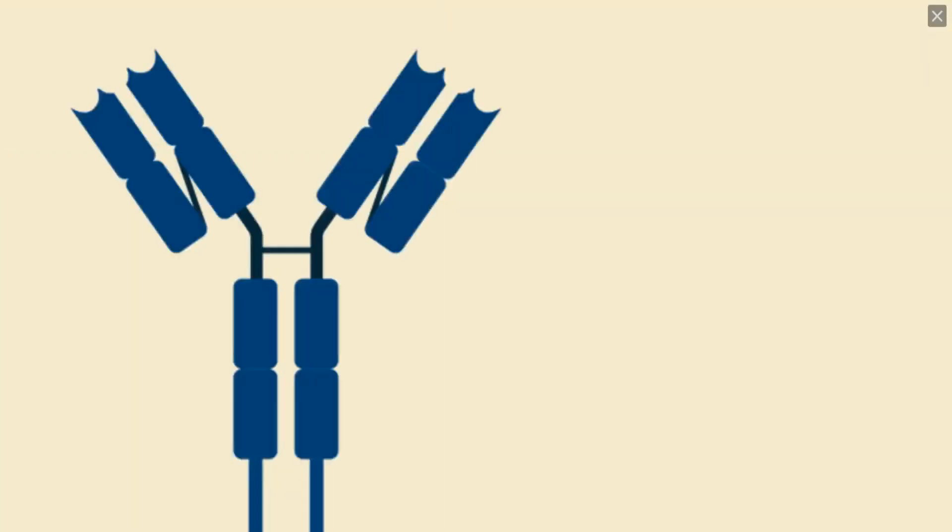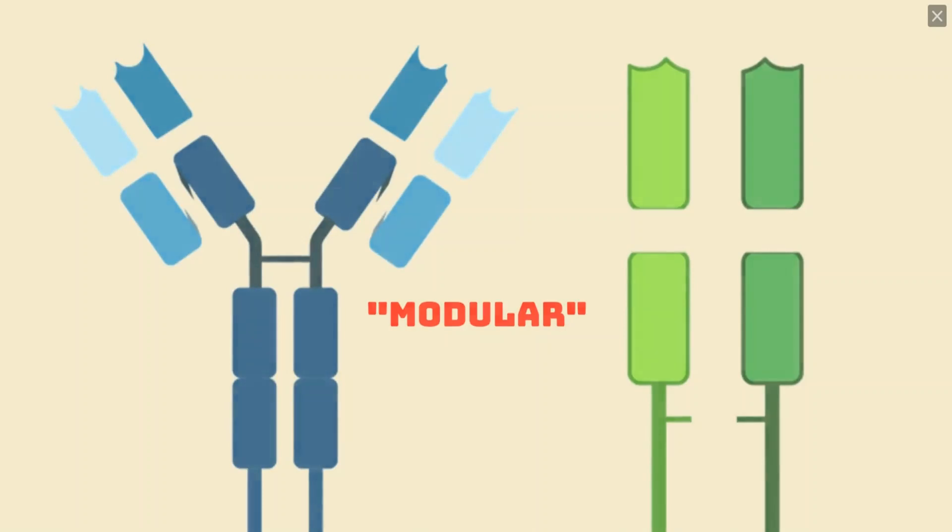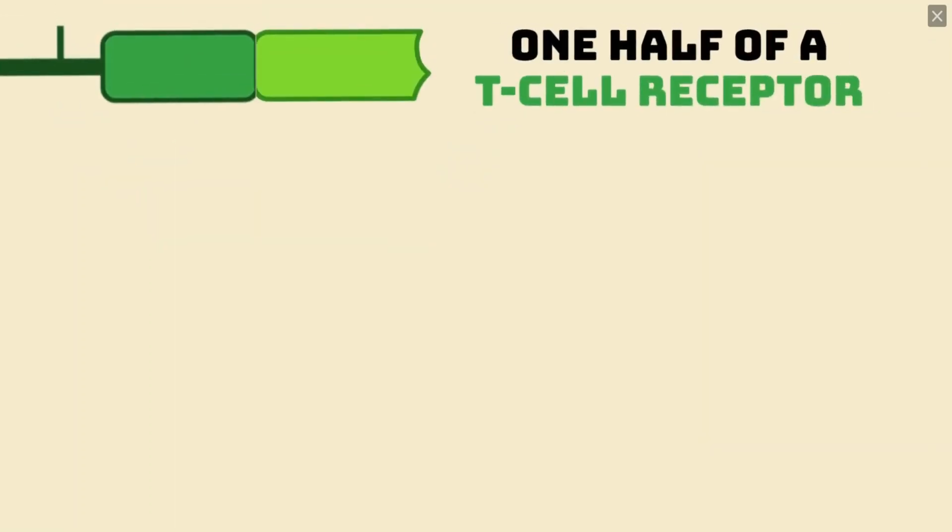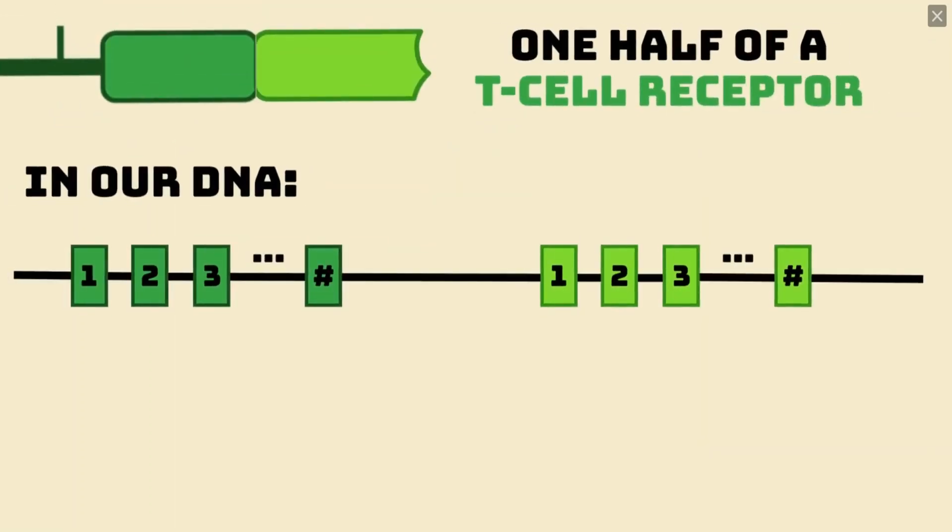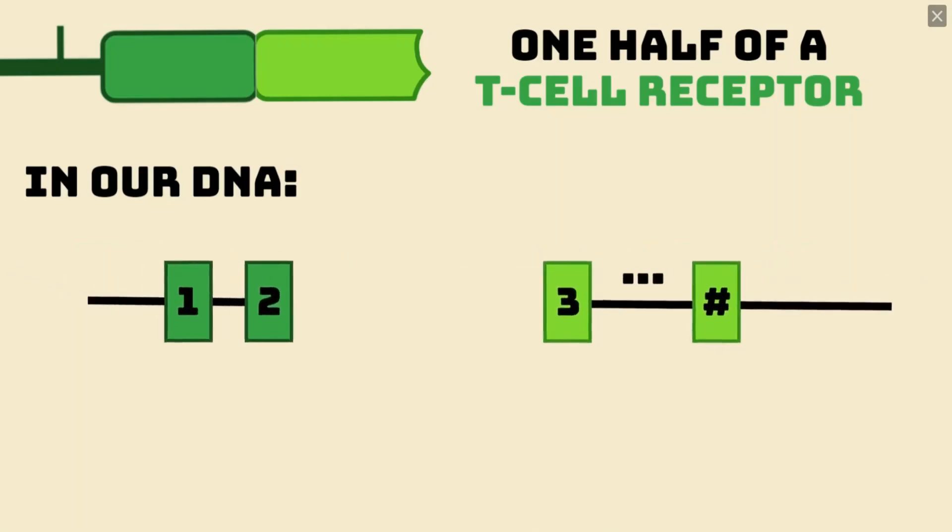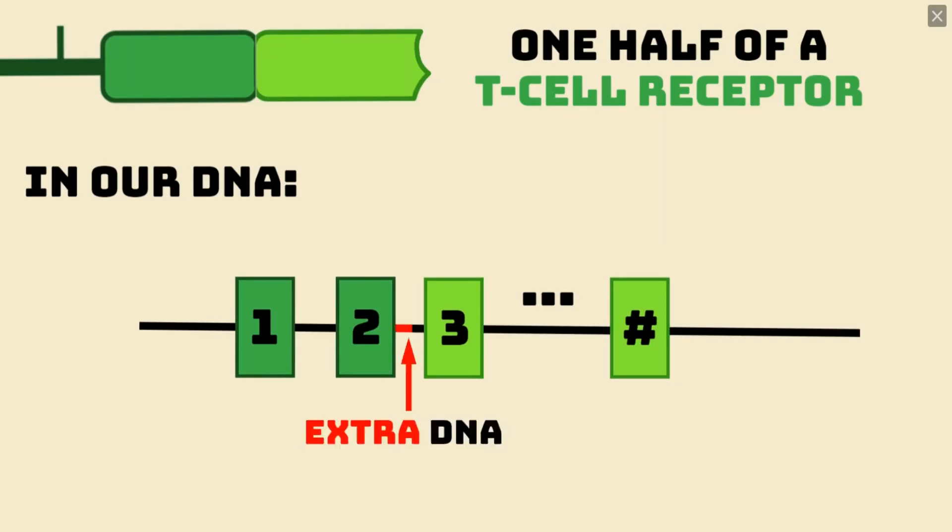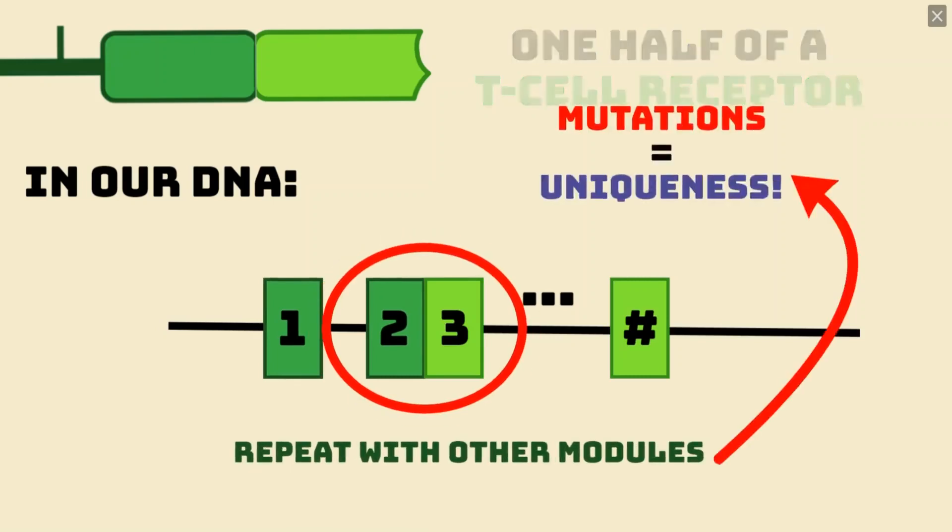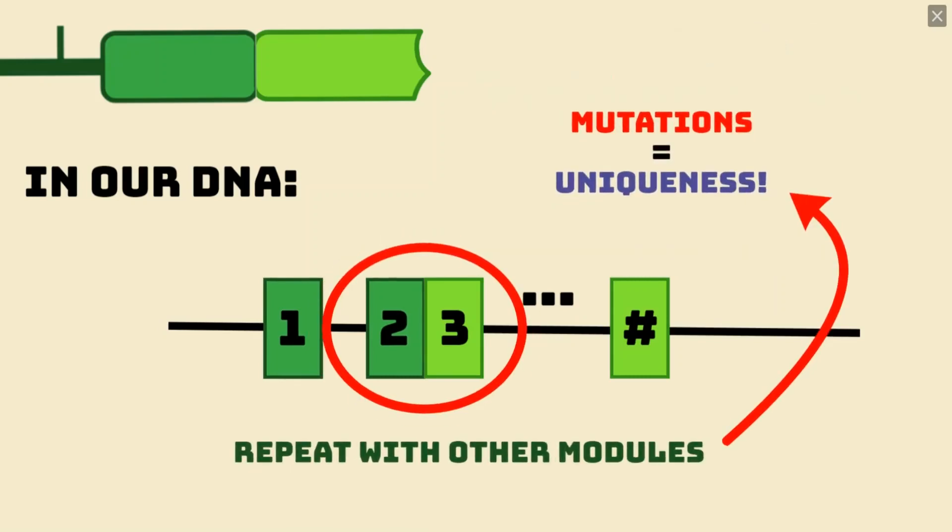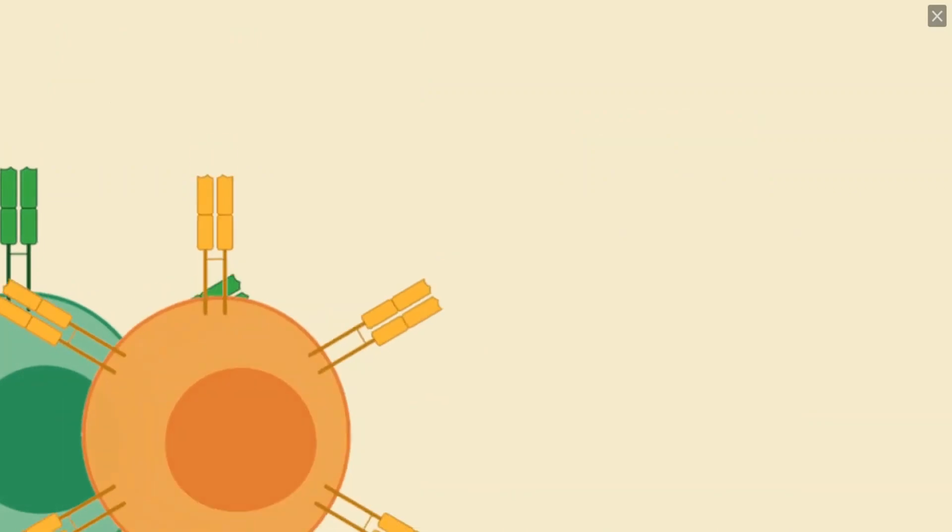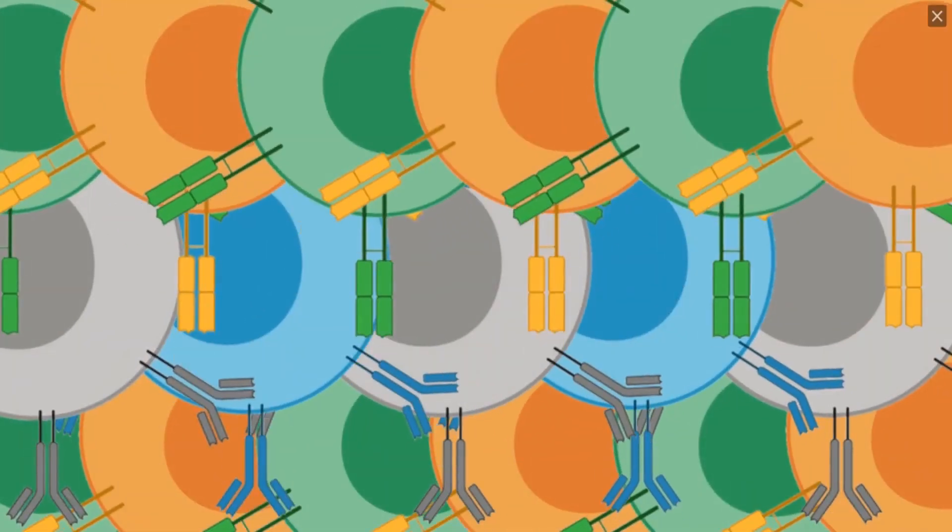See, B and T cell receptors are actually modular proteins. Each module has many different variants, encoded into our DNA. When making a receptor, the cell first randomly selects one variant of each module, and cuts out any DNA in between. The modules of DNA are then glued together, in an imperfect process where random bits of DNA can be added or removed. These two steps will ensure that it will be very difficult for you to find two naive lymphocytes with the exact same receptor. And given how many new lymphocytes our bodies make in a day, we can begin to see how the adaptive immune system can recognize anything thrown at us.